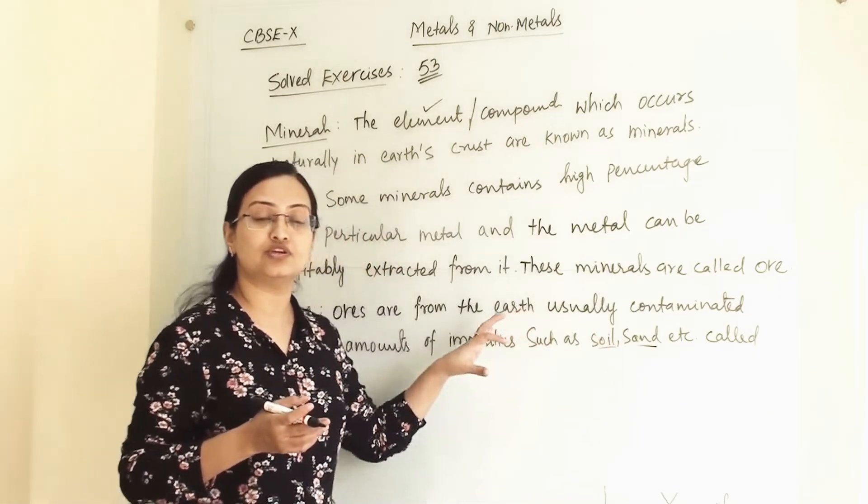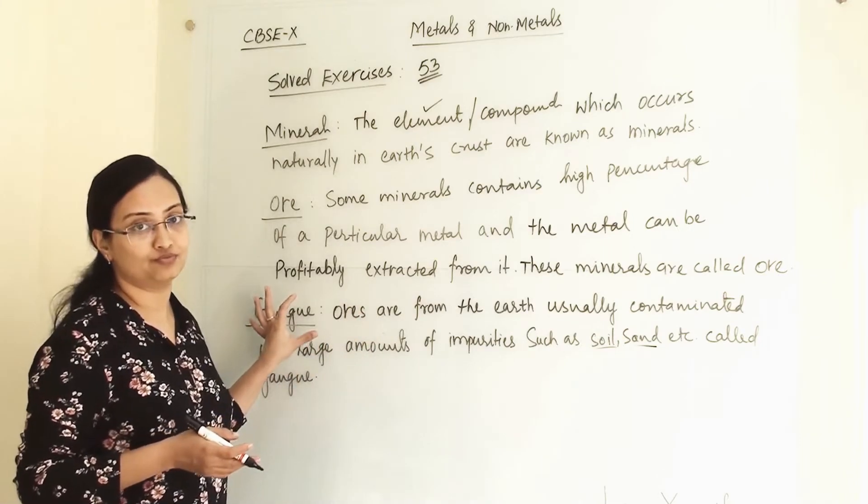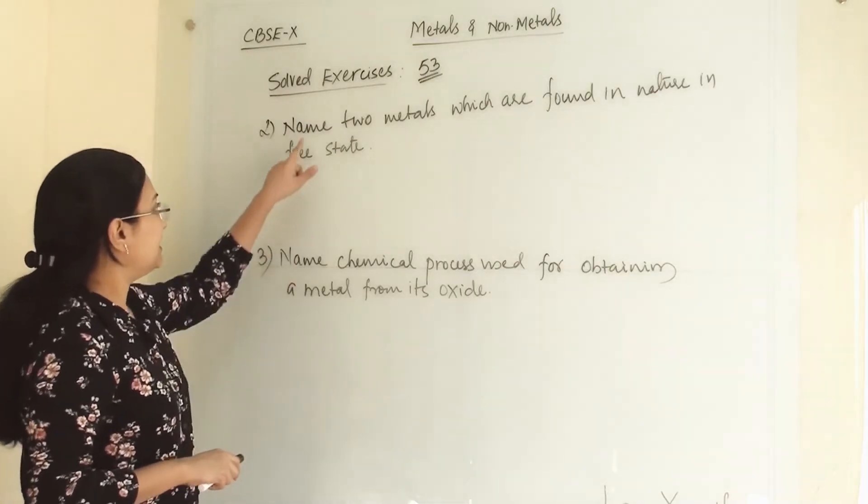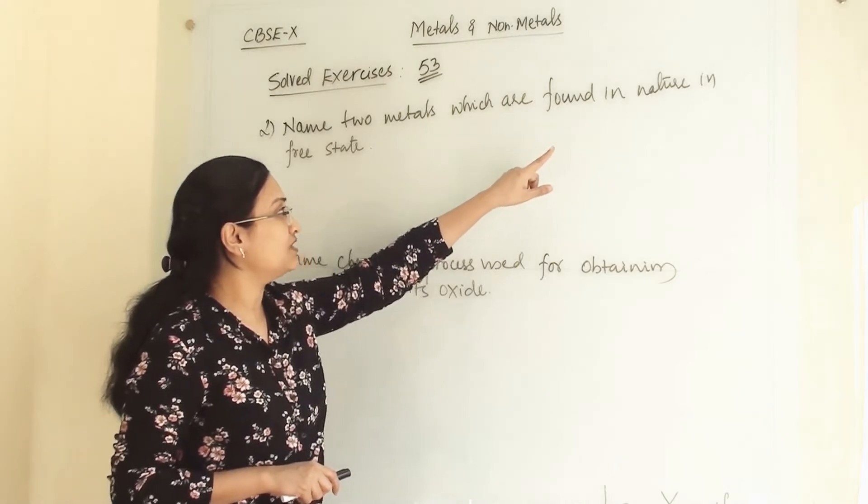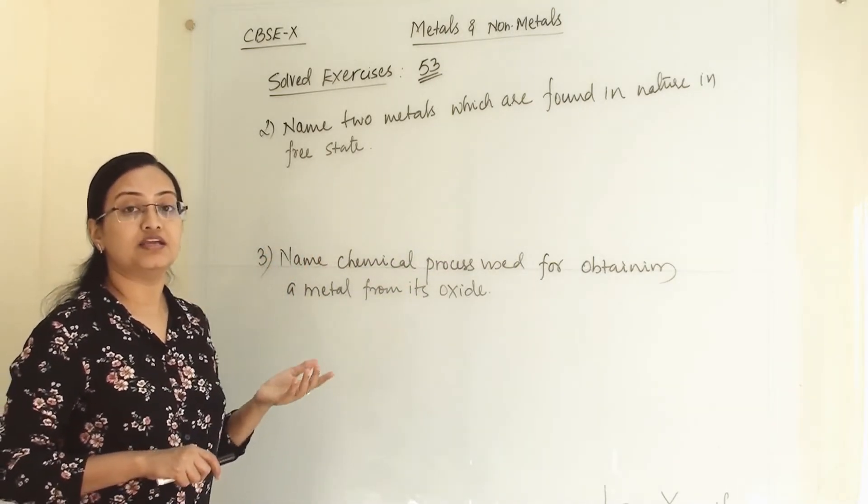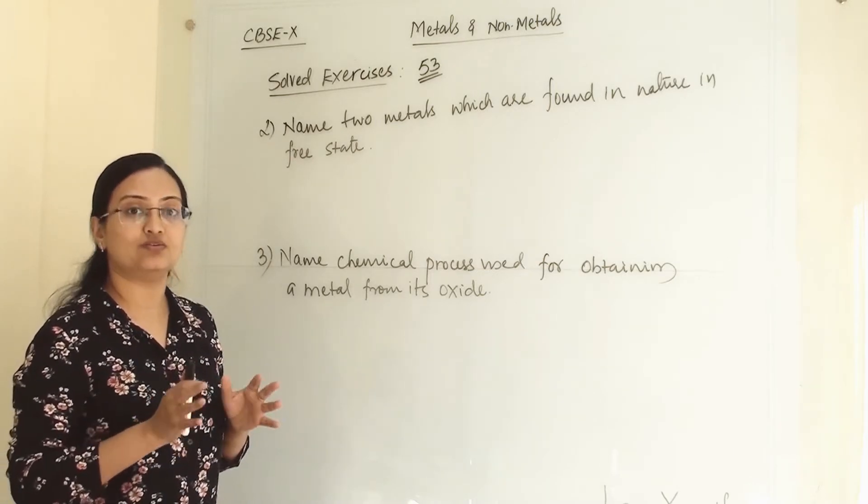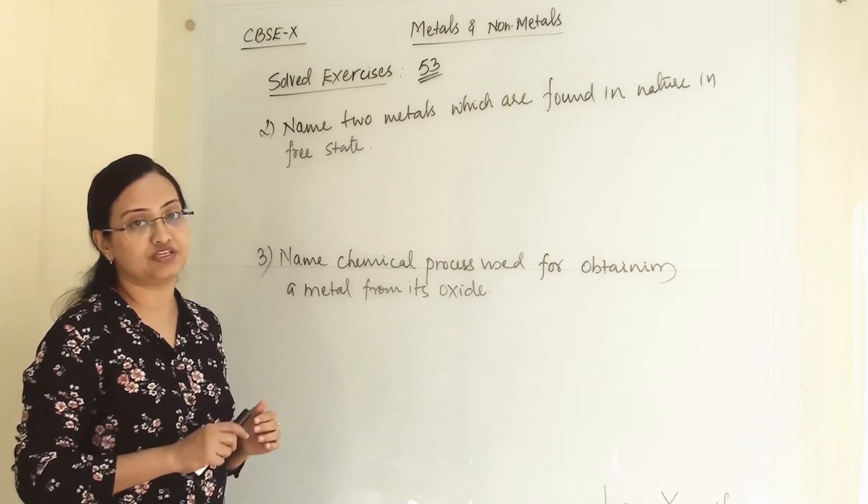The soil and sand, all those impurities remaining present in ore, are known as gangue. Second question: Name two metals which are found in nature in free state. When metal will occur in free state in nature, when it has least reactivity, then only they can exist in free state.